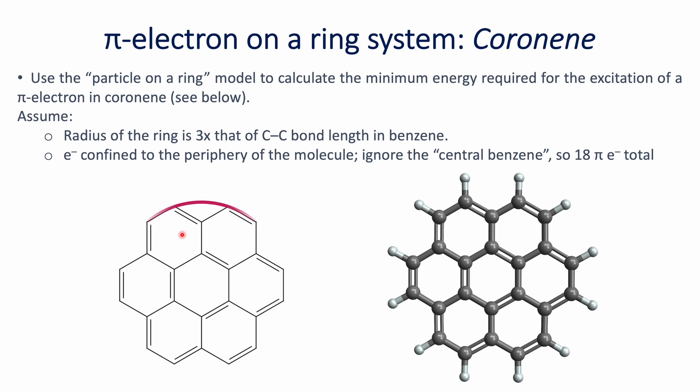So here is the ring we are considering, and we're going to ignore the central benzene, so in total you have 18 pi electrons in this system.